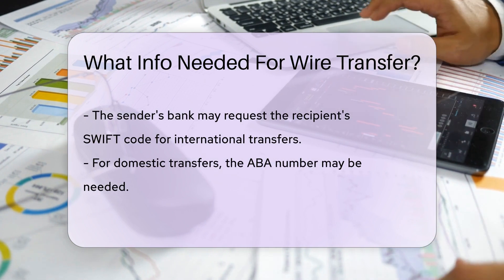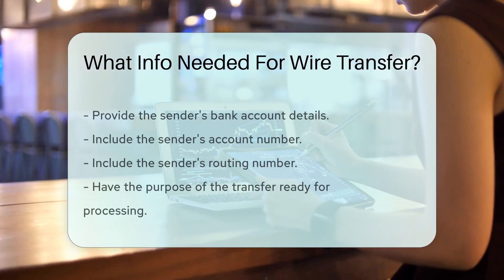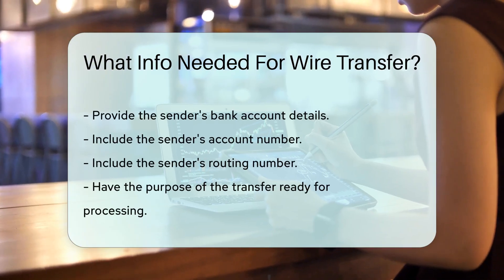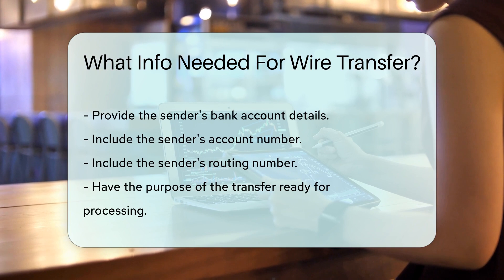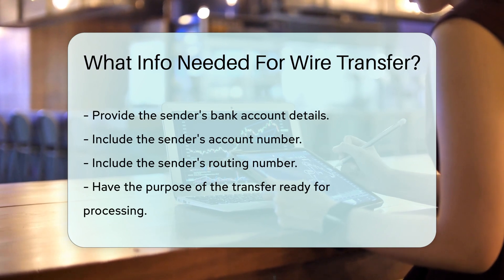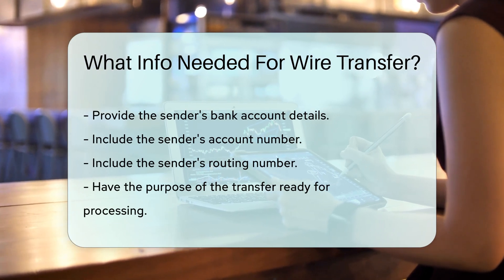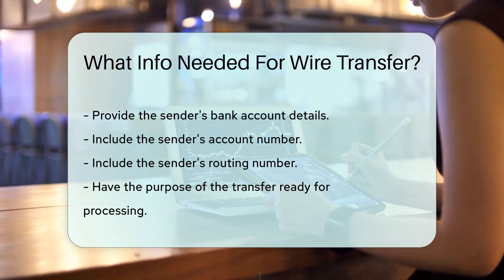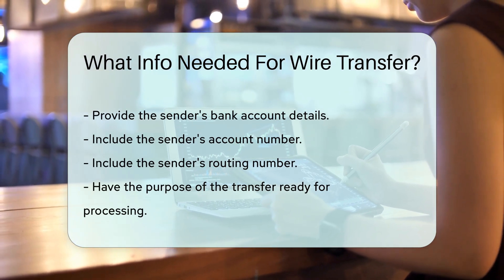If the transfer is domestic, the ABA number may be needed instead. The sender must also provide their own bank account details, including their account number and routing number. Lastly, the sender should have the purpose of the transfer ready, as some banks require this information for processing.